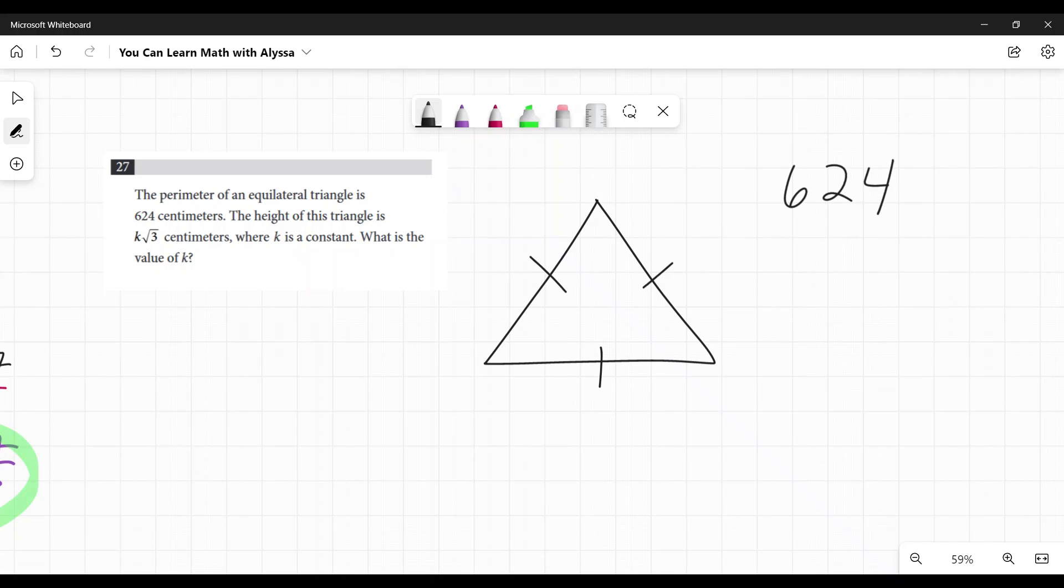So if the whole thing is 624, I'm going to divide that by three. So each side is 208. I'm just going to go ahead and write that down. Okay, moving on.